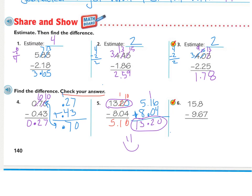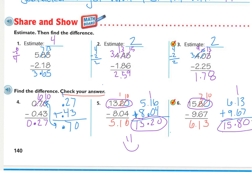On number six, again you have an empty space, then subtract, regrouping as you need. When doing your check, take what you found and add it to the number you took away, lining up your decimals, and then you should get your number from the top. Six and one is seven, and one is eight — decimal in line. Nine and six is fifteen. Do they match? Yes, they do.